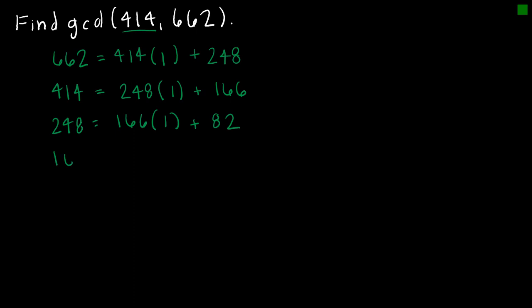And then 166 is equal to 82 times 2 plus a remainder of 2. And then 82 equals 2 times 41 plus a remainder of 0. So my answer is the greatest remainder that is non-zero, which is 2.